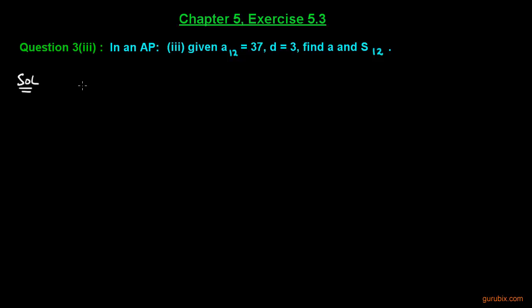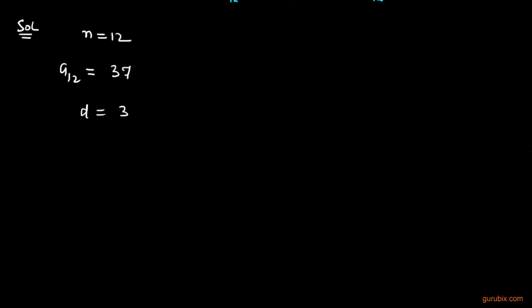We are given n equals 12, A₁₂ is given as 37, and the common difference is given as 3. We have to find a, so we shall use the general term to find the first term.